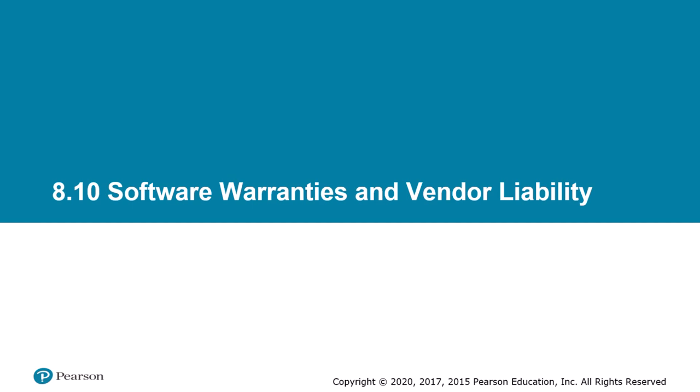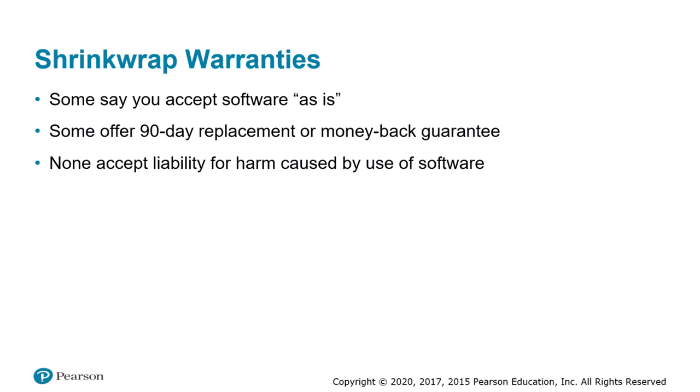In the United States, contracts and warranties are primarily governed by the states rather than the federal government. The Uniform Commercial Code (UCC) represents an attempt to harmonize laws governing commercial transactions across the 50 states, and nearly every state has adopted it with only minor variations. Traditional consumer software was often called shrink wrap software because of the plastic wrap surrounding the box. In the early years of personal computers, consumer software manufacturers provided no warranty — purchasers had to accept shrink wrap software as is. Today many manufacturers provide a replacement or money-back guarantee if the program fails, but none accept liability for harm caused by use of the software.